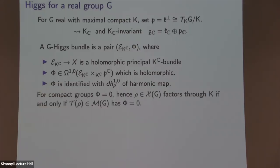Importantly, this definition makes sense for any real group, including compact groups. But when the group is compact, it's its own maximal compact, meaning the 𝔭 term is zero. So a Higgs bundle for a compact group is just a holomorphic principal bundle — the structure group is the complexification of the group, and the φ term must be zero. So to show components don't contain representations factoring through compacts, I need to show φ is never identically zero in those components.